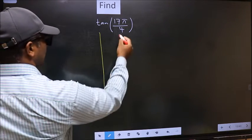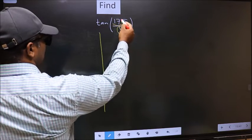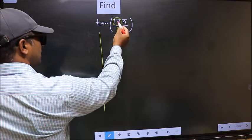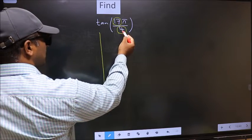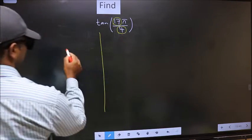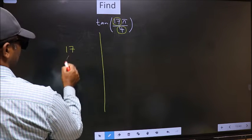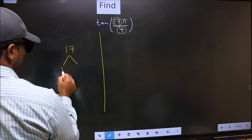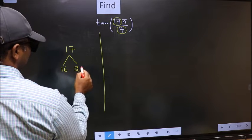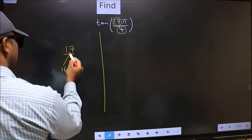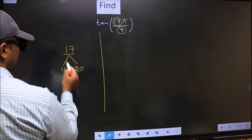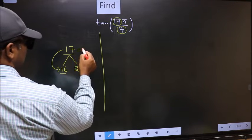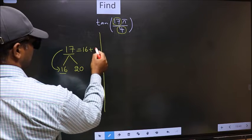In the denominator, we have 4. In the numerator, 17. Now, you should check. 17 is close to which multiple of 4? What I mean is 17 and here you should write multiples of 4, that is 16 and 20. Now, 17 is close to which number? This is close to 16. So, 17 should be written as 16 plus 1.